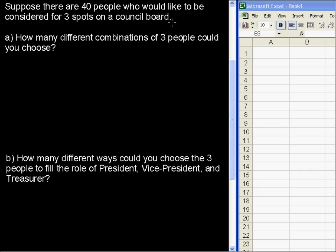Suppose there are forty people who would like to be considered for three spots on a council board. How many different combinations of three people could you choose?